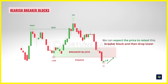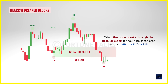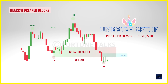Once the breaker block is identified and marked, we expect price to return back to it and then continue to decline lower. The breaker block is validated when price retests it. To make this a high-probability setup, the breakout below the breaker block should be associated with an imbalance — specifically a SIBI (sell-side imbalance, buy-side inefficiency). If this imbalance is generated during the breakout, price has more reason to retest the breaker block to fill the imbalance. This setup is known as the unicorn setup.